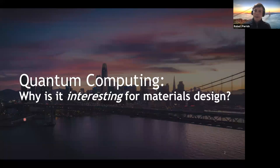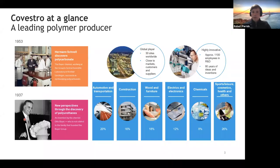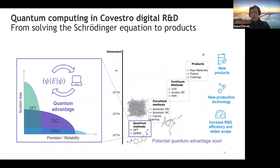Our first question today is: why is it even interesting to be considering quantum computing for materials design applications? As one of many possible answers, I will share with you Covestro's interest in it. Covestro is a leading producer of both innovative new polymers as well as raw materials that go into polymer synthesis in a wide variety of application areas in domain chemistry.